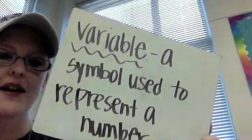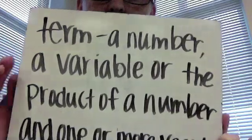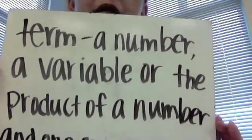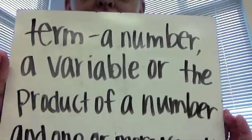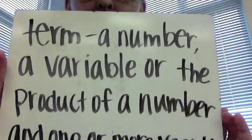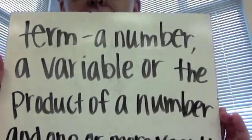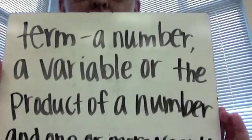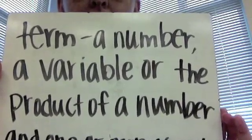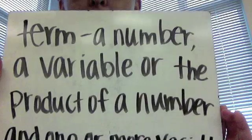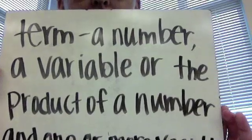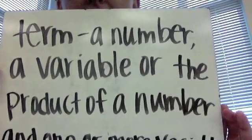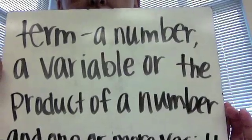The next definition that we have to look at is terms. You guys are probably all too young for the show Home Improvement, but I am totally feeling like the neighbor who is always behind the fence. So here's what a term is. A term is a number, a variable, or the product of a number and one or more variables. Write that one down. A term is a number, a variable, or the product of a number and one or more variables.